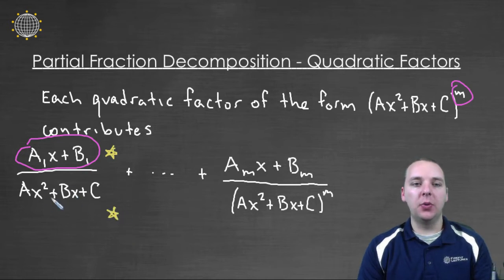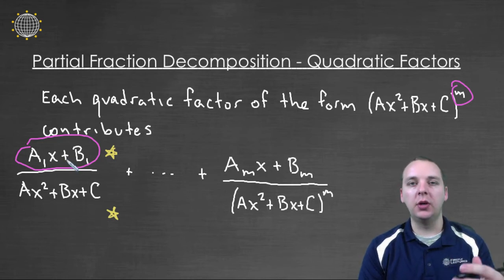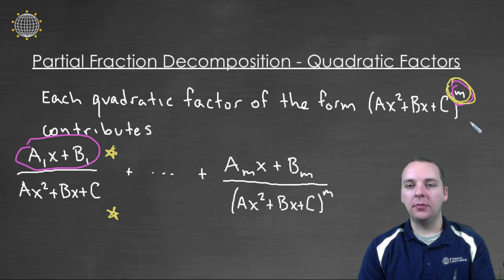So if it's a quadratic, your numerator would be linear. Or if your denominator is linear, your numerator would be a constant, right? It's always one less than the denominator. You contribute that many terms matching whatever your power is for your quadratic in the denominator.